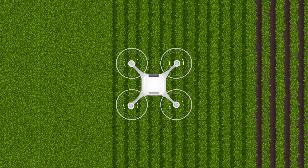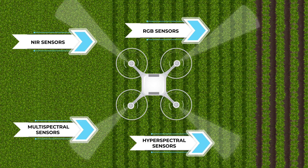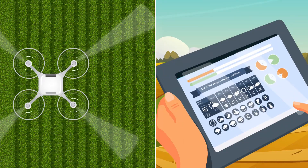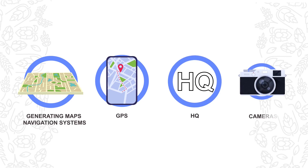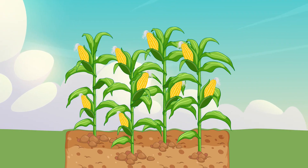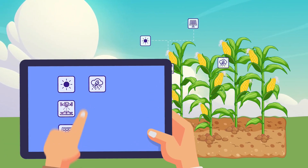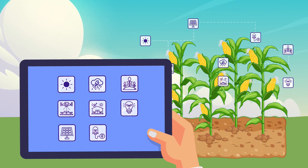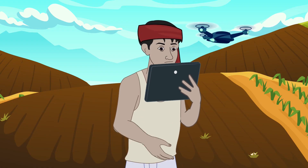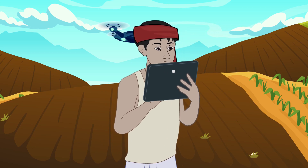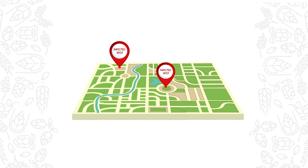How does crop monitoring and analysis work? Number one: by analyzing the area — drones equipped with different types of sensors like RGB, multi-spectral, NIR, and hyperspectral sensors collect aerial data. Number two: by generating maps using navigation systems, GPS, and high-quality cameras. Number three: by analyzing images to find accurate information about plants and their growth stages, identifying abnormalities and classifying them using various algorithms. Number four: crop monitoring produces detailed reports of fields and actionable steps for farmers. Number five: by automated targeting of infected spots while leaving other parts unaffected.